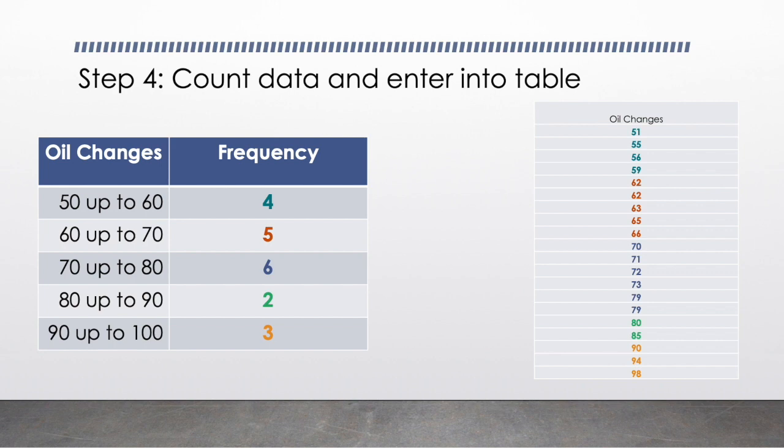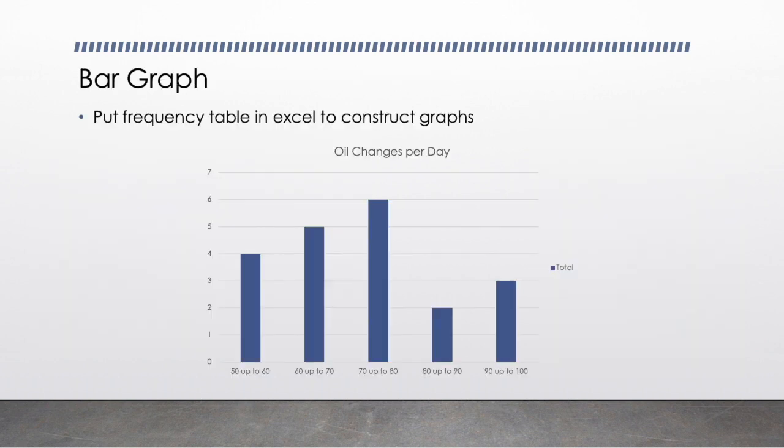So just to show you, this is what the quick little bar graph looks like that I pulled out of Excel by putting my frequency table into that program. And again showing that we peak here at having 70 to 80 oil changes complete per day—that's what's happening the most often.